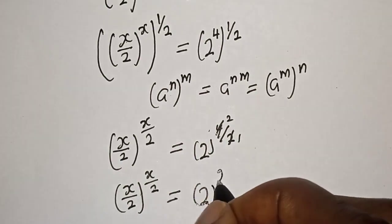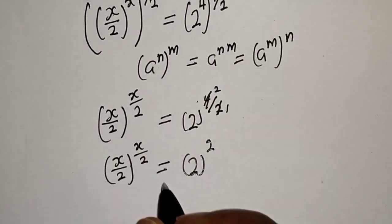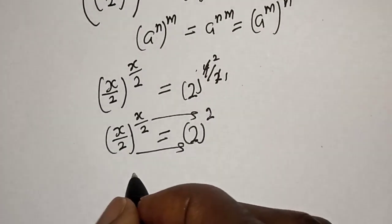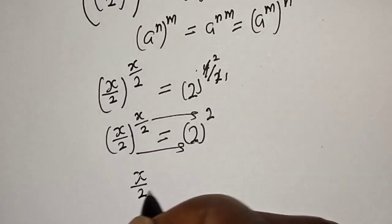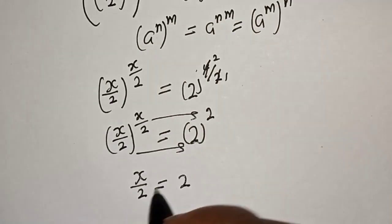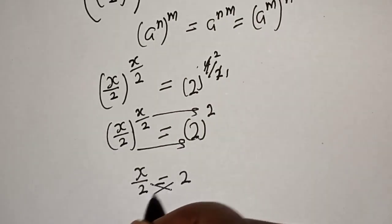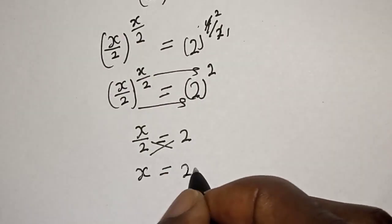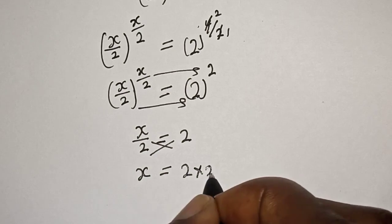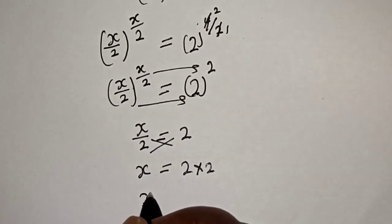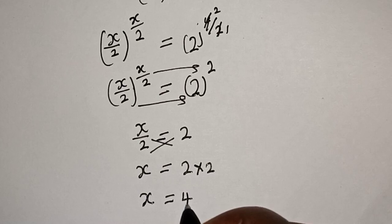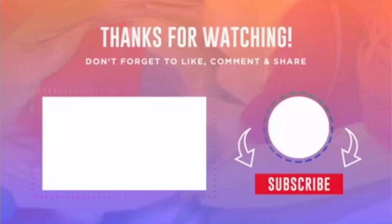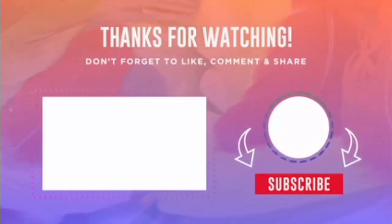By comparing both sides, this exponent is equal to this exponent. Therefore s over 2 is equal to 2. If you cross multiply, s is equal to 4, and that is our final answer. If you enjoyed the class, please don't forget to like, share, comment, and subscribe.